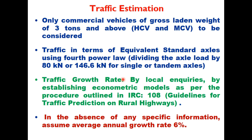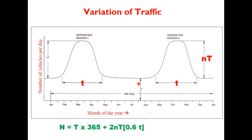If no specific information is available at the site, traffic growth rate can be assumed as 6 percent. In the case of new roads, estimation of traffic cannot be made based on a traffic count on that road, so a road in the vicinity with similar conditions is taken and a traffic count is made on that particular road.